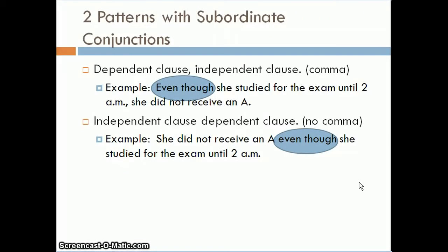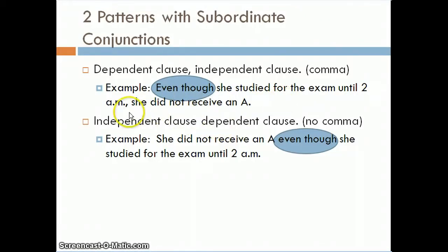When using a subordinate conjunction, there are two different patterns. If we put the dependent clause first, we need to use a comma. For example: 'Even though she studied for the exam until 2 a.m., she did not receive an A.' Here 'even though' is the subordinate conjunction, 'even though she studied for the exam until 2 a.m.' is the dependent clause, and because it comes first, we place a comma at the end of the dependent clause.